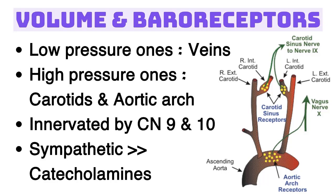Effective arterial blood volume (EABV) is the same thing as stroke volume and cardiac output. You must absolutely know, when your cardiac output decreases, all the physiologic mechanisms that happen in your body to restore volume — because it's the most serious condition our body can face. When we get hypovolemic, we have decreased cardiac output, meaning oxygenated blood can't reach our tissues. Volume is supreme in our bodies — absolutely essential.